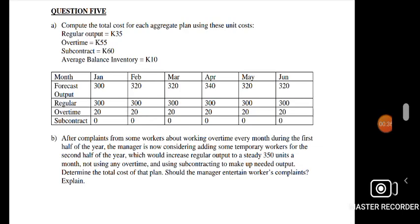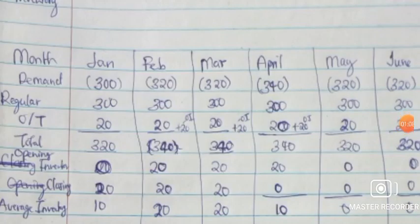As you can see, you've been given months from January to June. I'm also going to create the same table that you're seeing on the screen, and include the same columns: forecast output, regular output, overtime, and subcontract — everything put into the table as you will see on my next screen. Here is the same table rewritten, the same table from the previous screen.